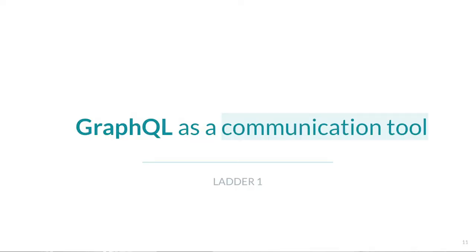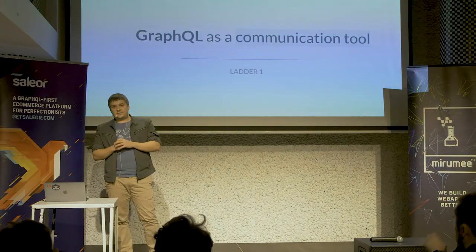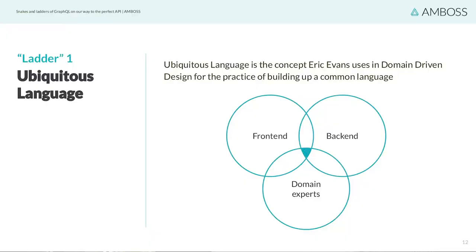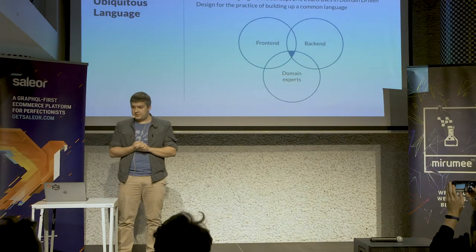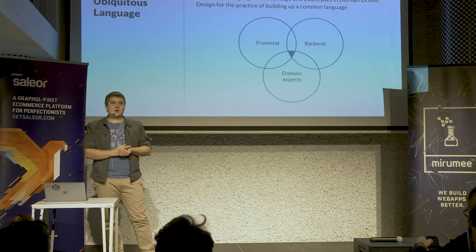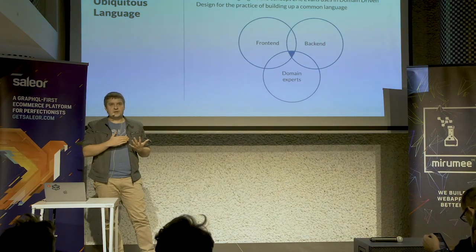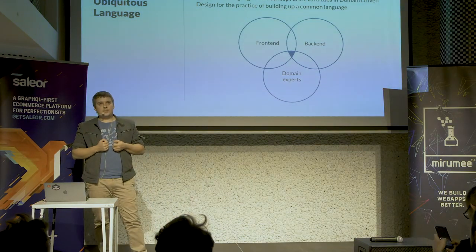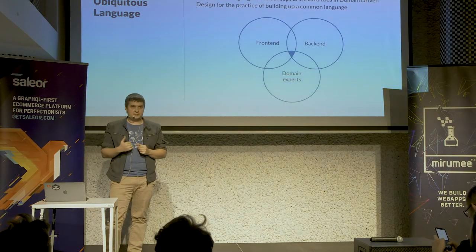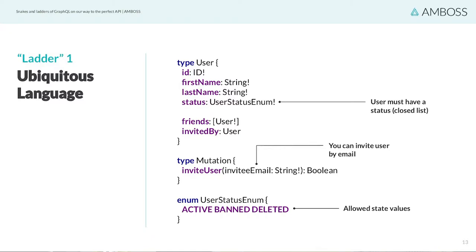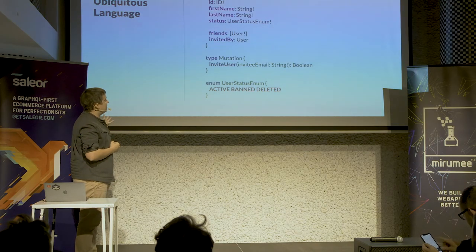While doing that, we actually identified the first ladder of GraphQL. There is a concept of ubiquitous language introduced by Eric Evans in domain-driven design, and GraphQL seemed to be this kind of language for our development process. It became the shared language between back-end developers, front-end developers, and technical product owners or product managers, who were able to draw conclusions about the functionality of our API just by reading the GraphQL specification or navigating the interactive documentation.